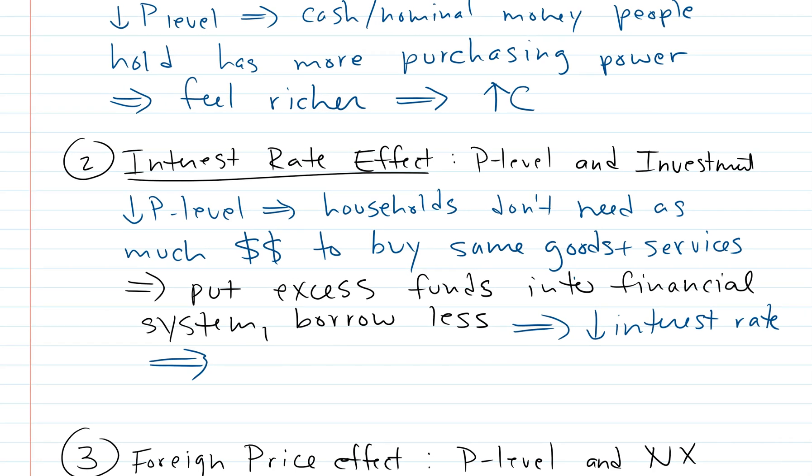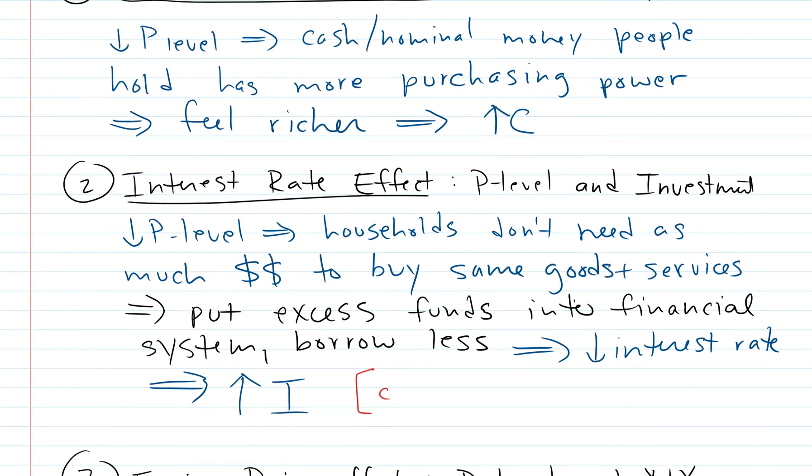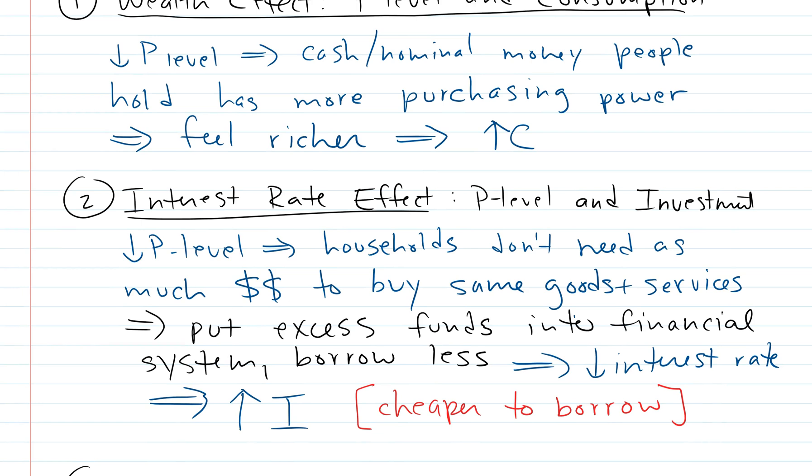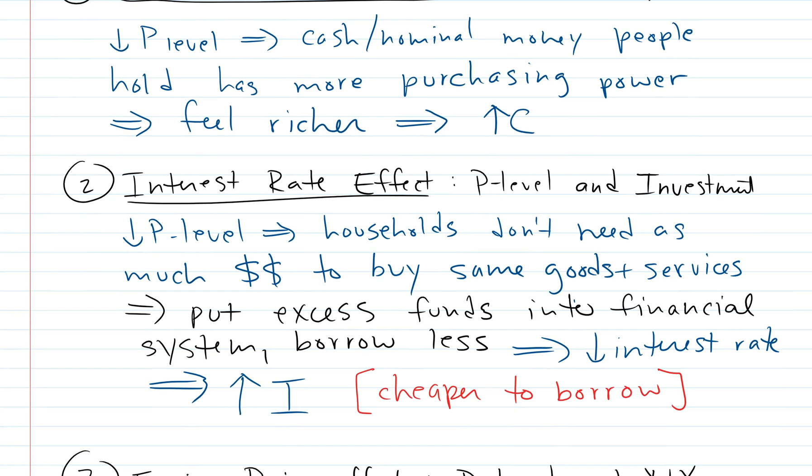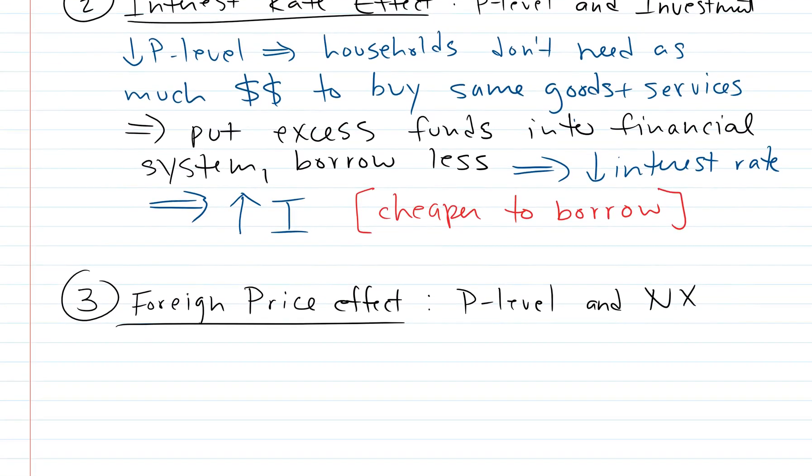Now investment is more attractive for firms. We're talking about physical investment - typically like big factories or large equipment purchases will be done using credit, and the credit will be cheaper. This is going to increase all kinds of physical investment: building new facilities, buying new equipment, buying new houses, just because it's now cheaper to borrow. So we have these two things going on: the households' cash and nominal money has more purchasing power - they feel richer, they buy more stuff - but they also save more money than they were before.